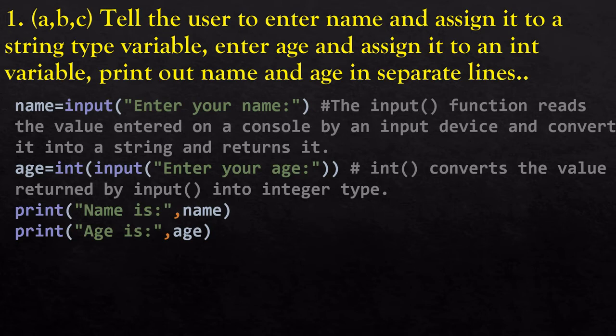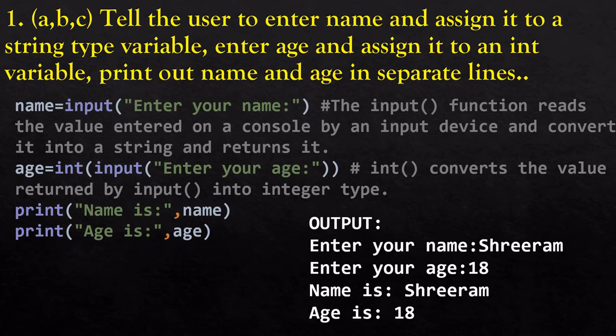Within the input function you can pass any string as a parameter, like 'enter your name'. Now age is another variable which will store the age entered by the user. By default the return type of input function is string, so we have to convert it into integer by using the int function. Within int function we call the input function so that whatever value is entered by the user is converted into integer and stored in the variable age.